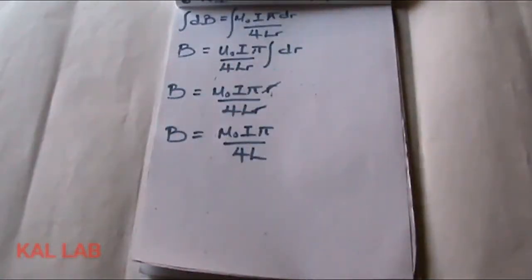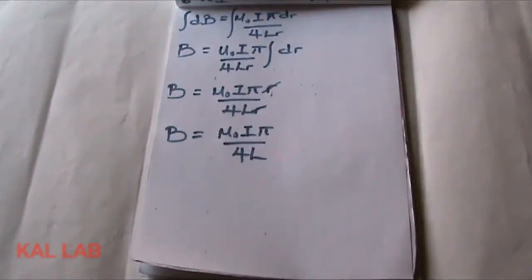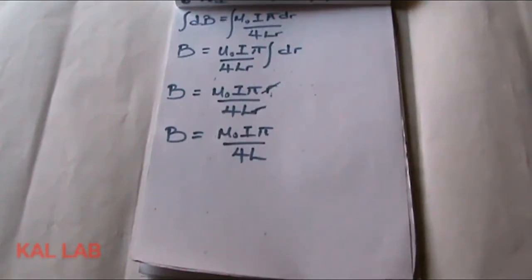I hope we all understood how to derive an equation using Biot-Savart Law to calculate the magnetic field that would be felt at the center of a semi-circular loop. Thank you very much for watching — please subscribe to my channel, drop a like, and leave a comment. Thank you very much.